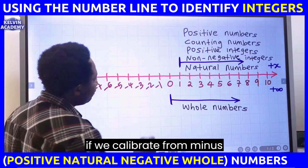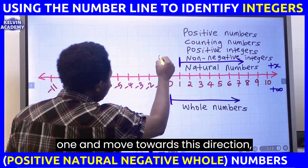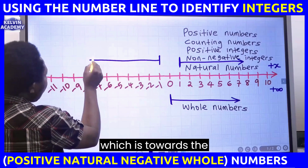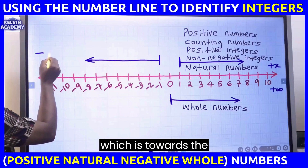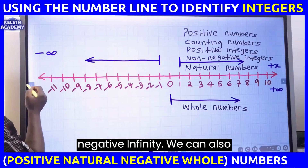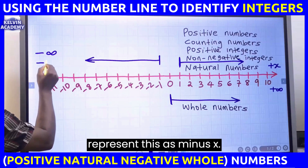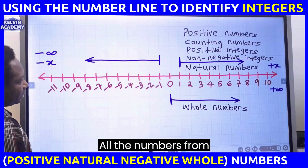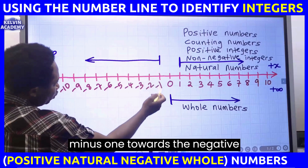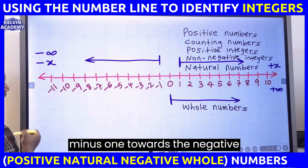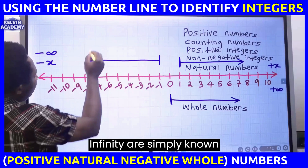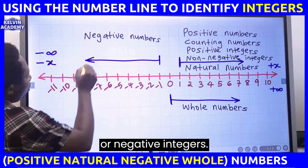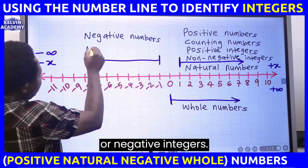If we calibrate from minus 1 and move towards this direction, which is towards the negative infinity, we can also represent this as minus x. All the numbers from minus 1 towards the negative infinity are simply known as negative numbers or negative integers.